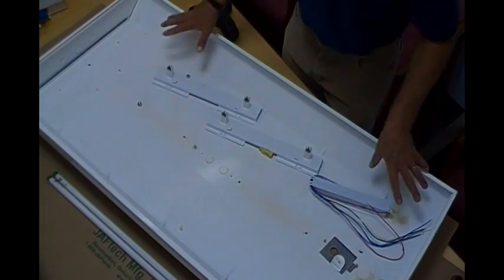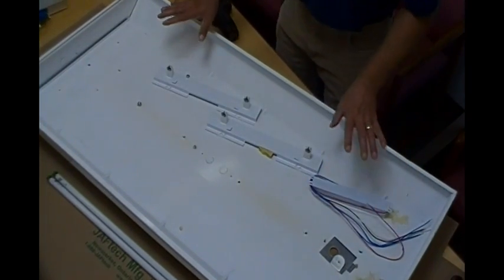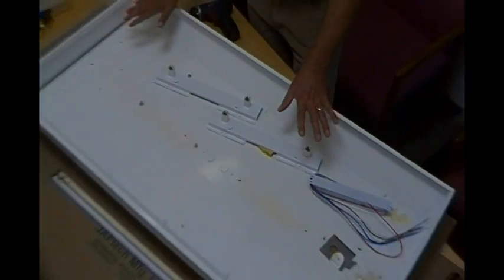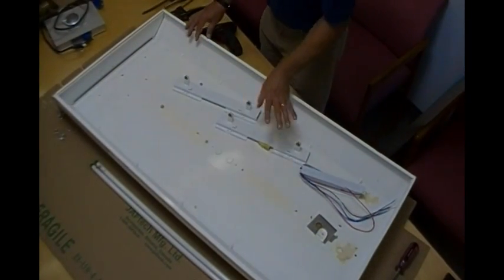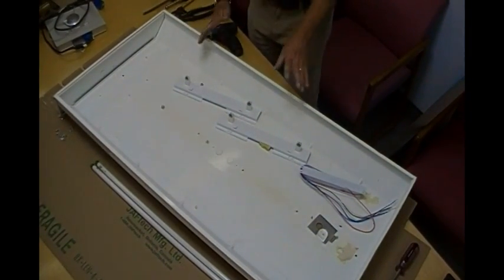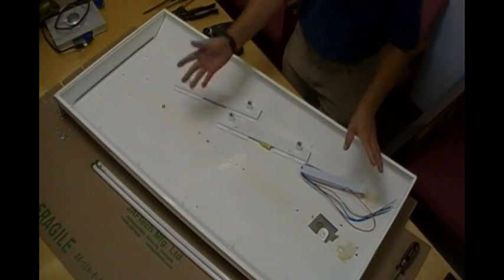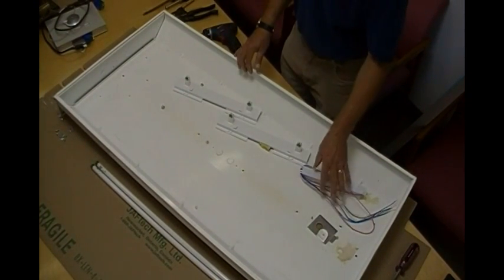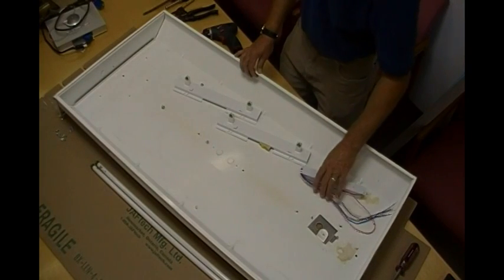So you'll want to get the fixture down to the original fixture housing so that you can begin your retrofit. You'll want to remove the ballast. Needless to say, disconnect the power. Make sure the power is turned off.